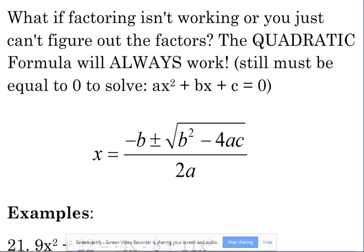B is the coefficient with the x, c is the constant by itself. Here is your quadratic formula if you don't remember it for now.